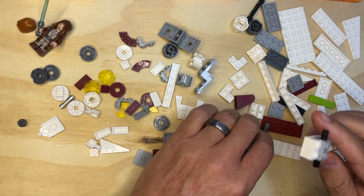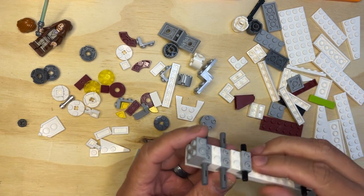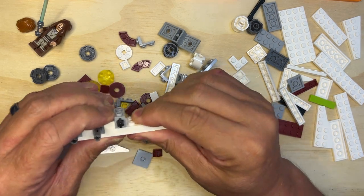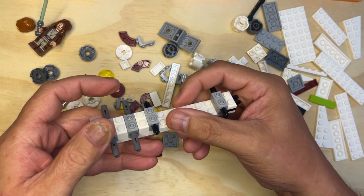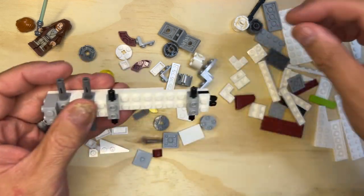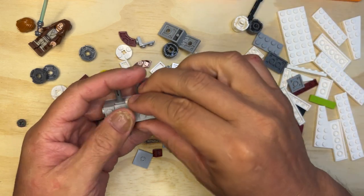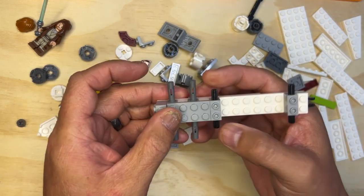Okay, and then we put this right up against there, on that part. Then we have two of these, just like that. I need a two by four light gray, which will go there.